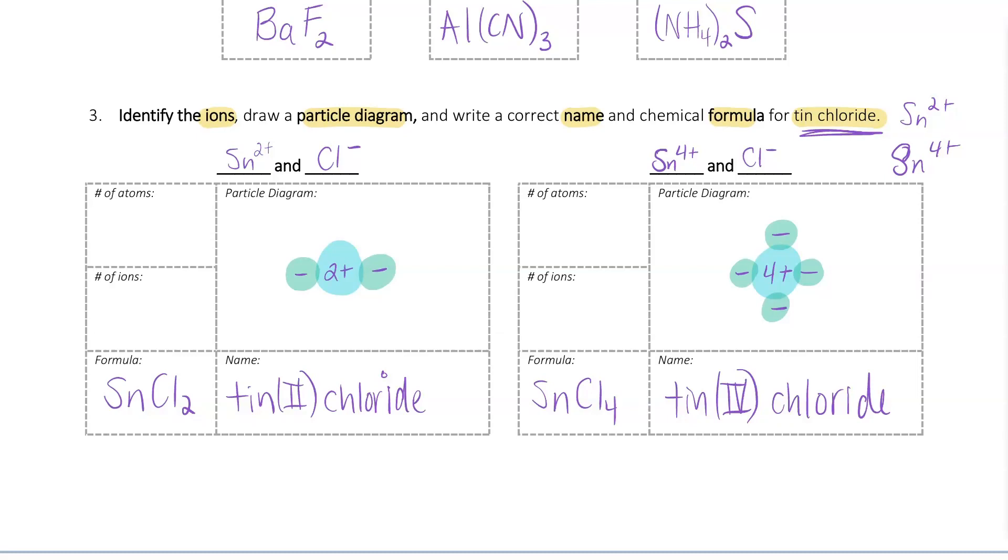Now, when we're counting up the number of ions, the number of atoms, we want to look at different things. Number of ions is going to be the number of charged particles. This can be one monatomic ion, or it could be a polyatomic ion. The number of atoms is just the total number of atoms. Now, these are going to be the same if you do not have a polyatomic ion, which is what we have here. So, if we take a look at what we've got, I can count there's 1, 2, 3 atoms all together. All three of those atoms have a charge, so I also have three ions. In my other picture, I've got 1, 2, 3, 4, 5 atoms. Each one of them has a charge, so we have a total of five ions.